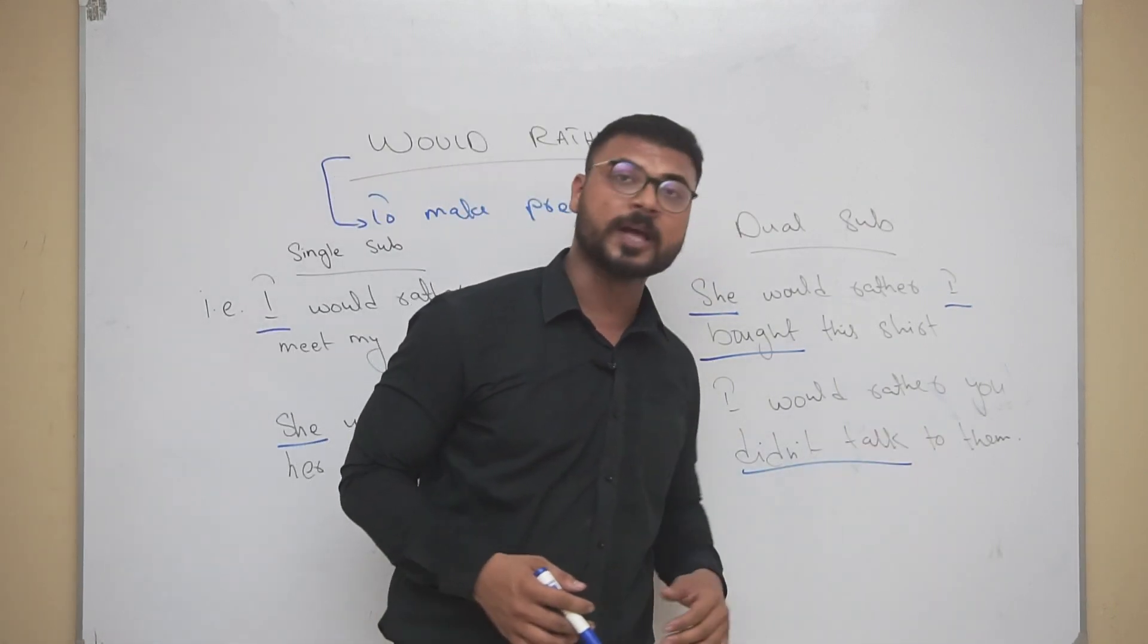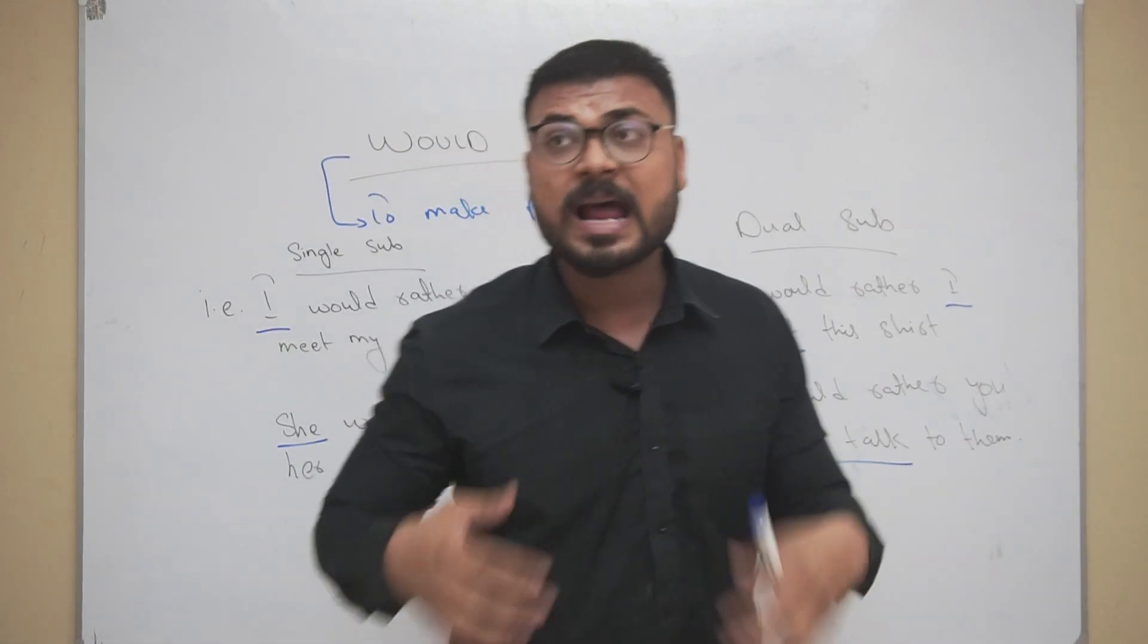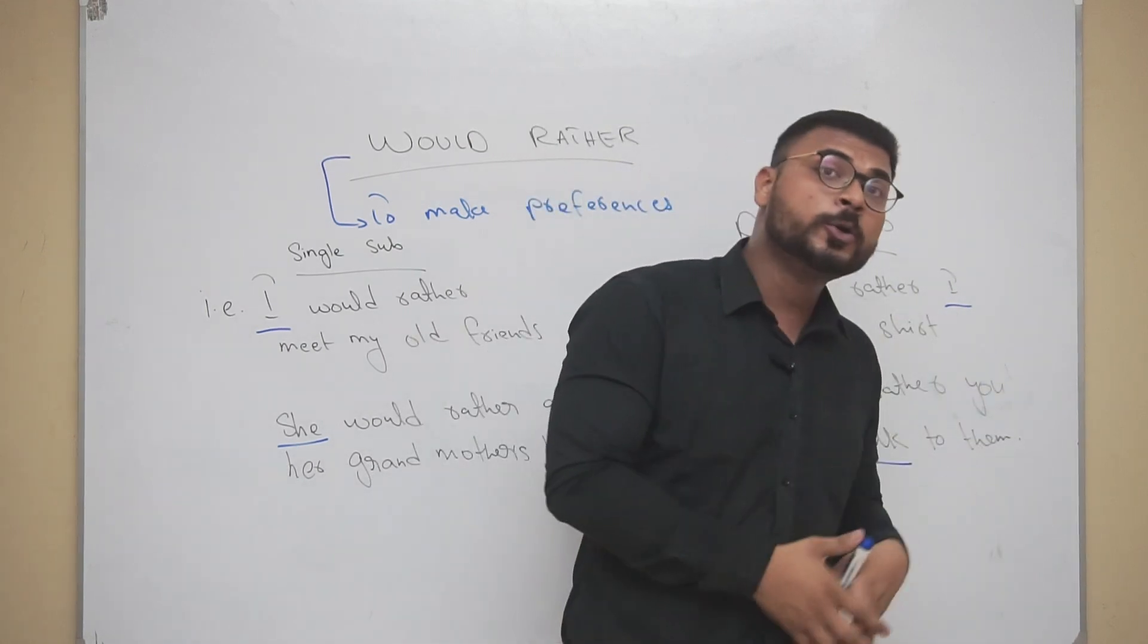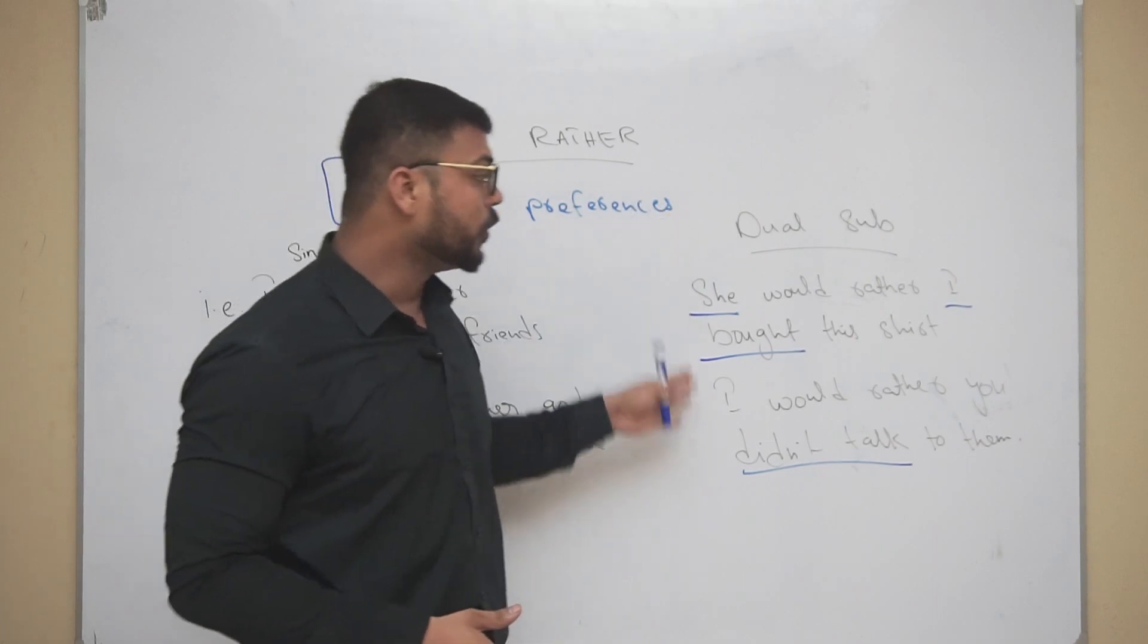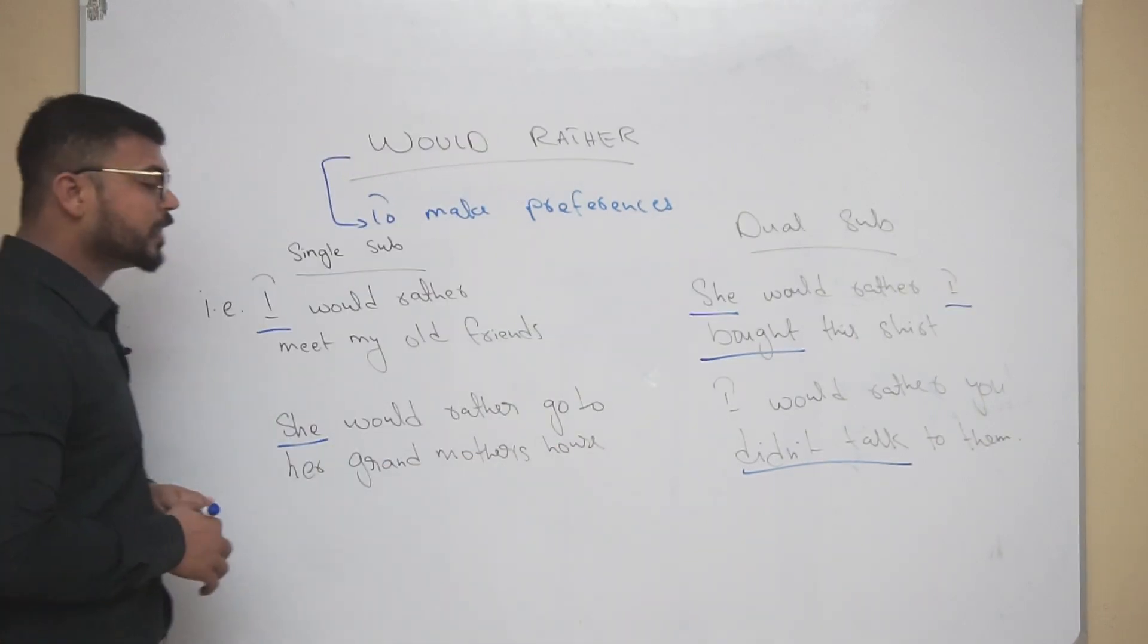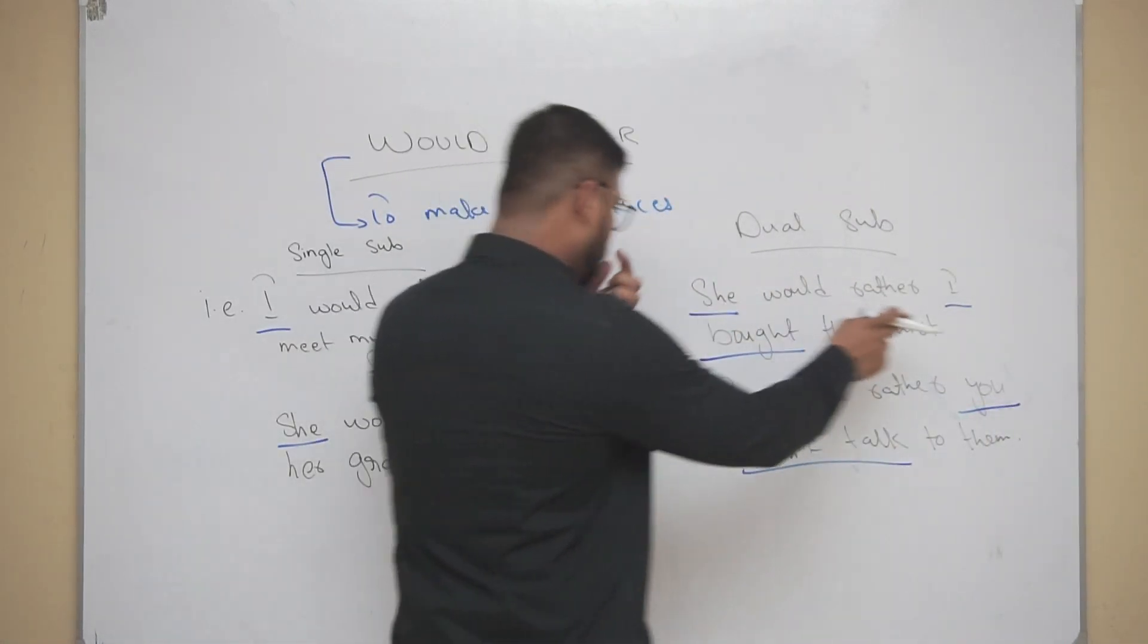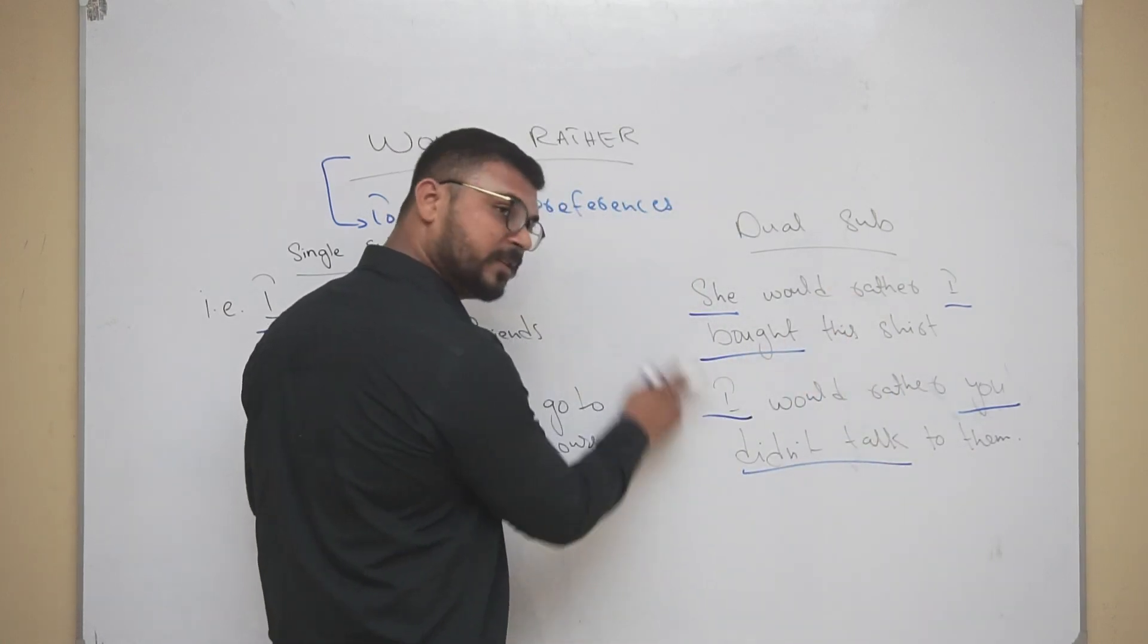For a negative, it's going to be: I would rather you didn't talk to them. This means that I prefer for you not to talk to them. So this is how would rather goes with dual subjects, and this is how would rather goes with singular subjects. You see - one, two, two subjects. These are underlined since they follow the rules of past tense.